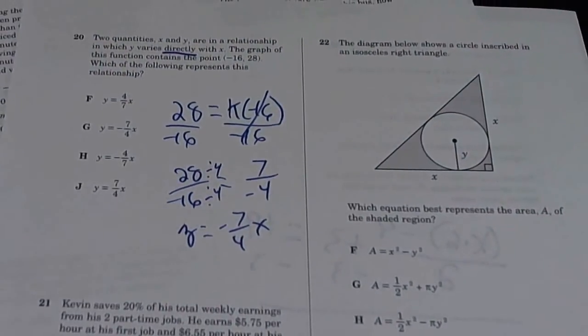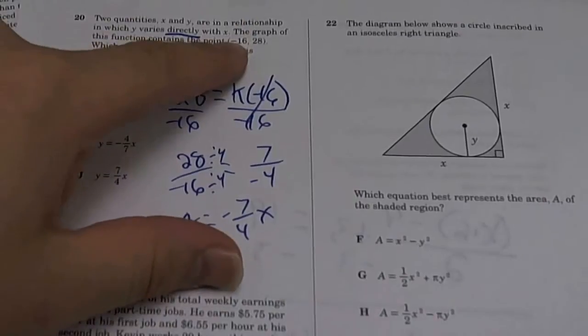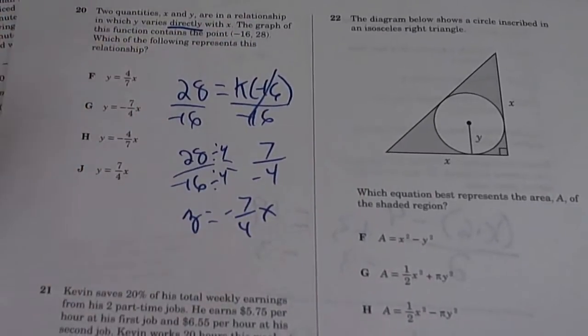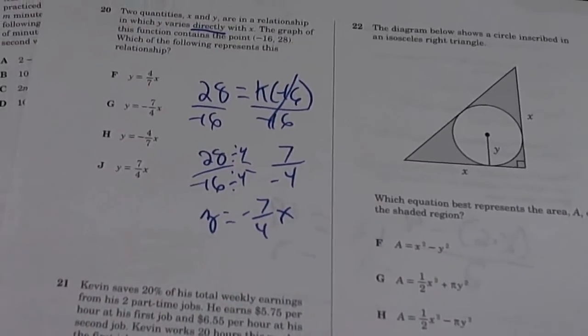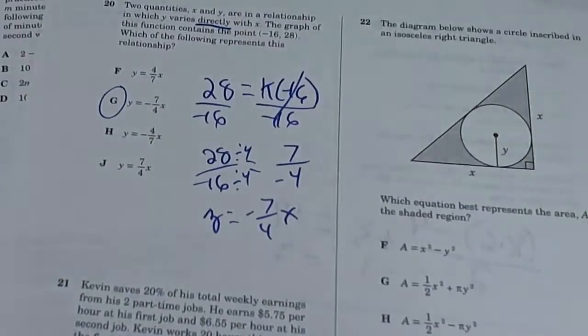To be sure again, plug in your X. So plug in negative 16. Negative 16 times this does give you 28. So the answer is G.